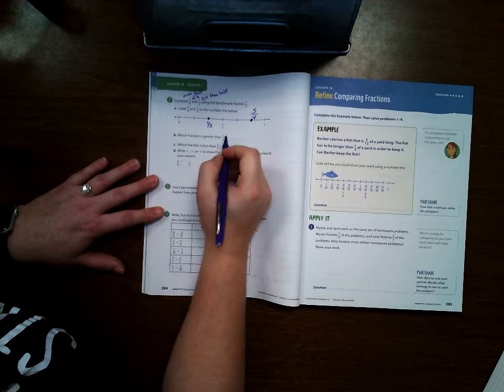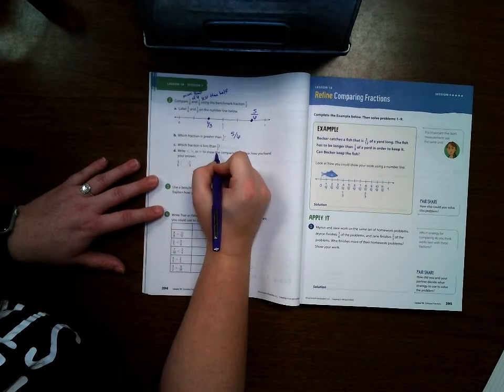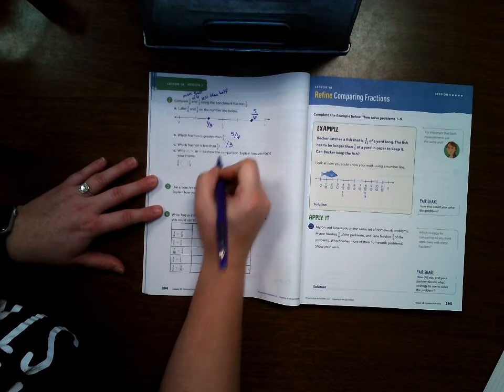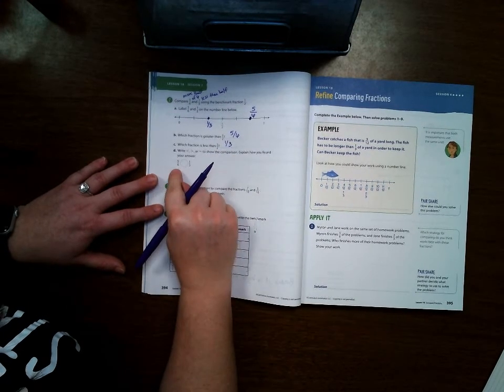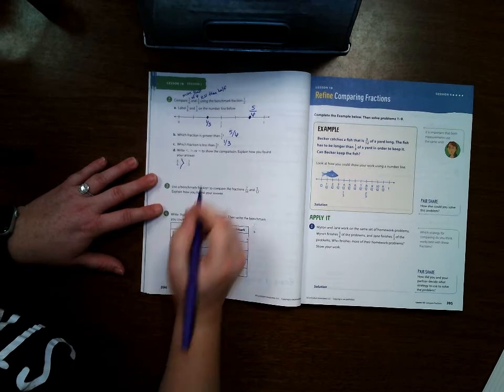Which fraction is greater than one-half? Five-sixths. Which fraction is less than one-half? One-third. Show the comparison. So it would be five-sixths.